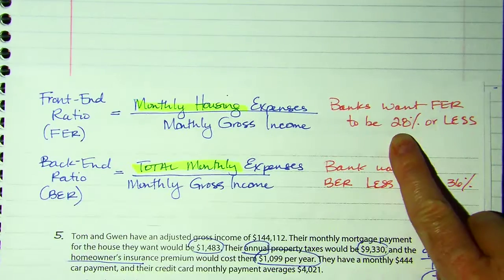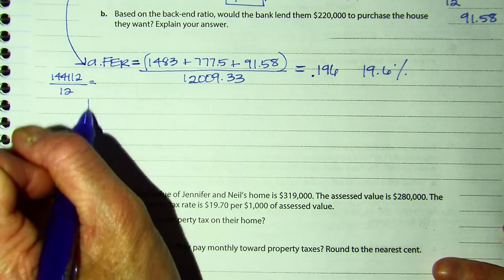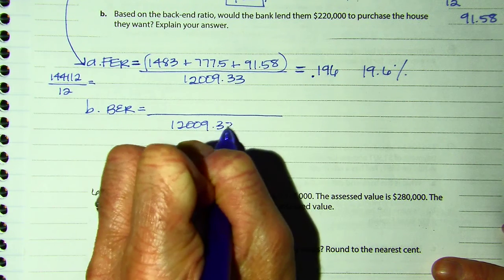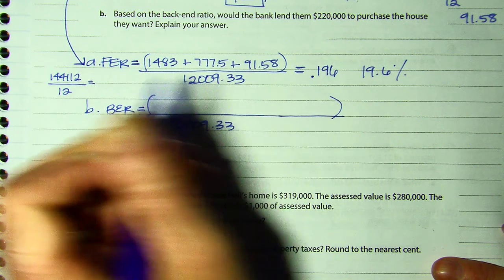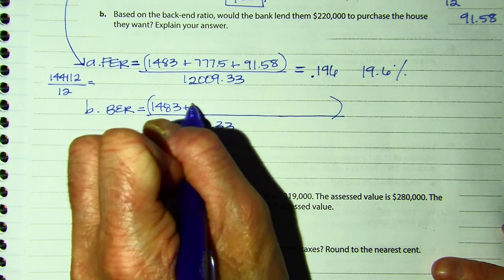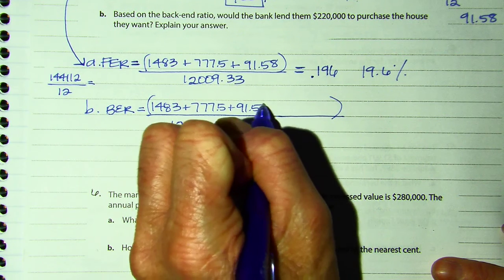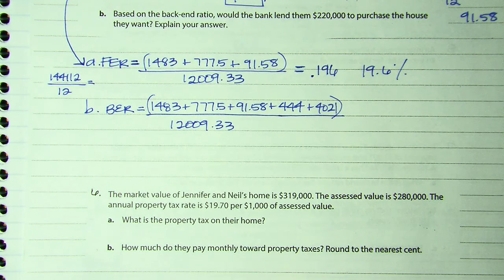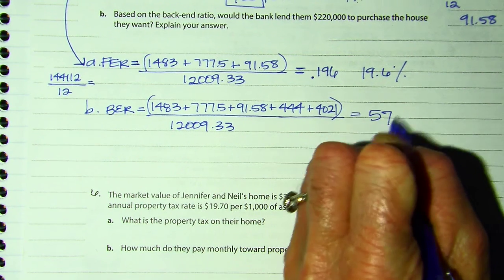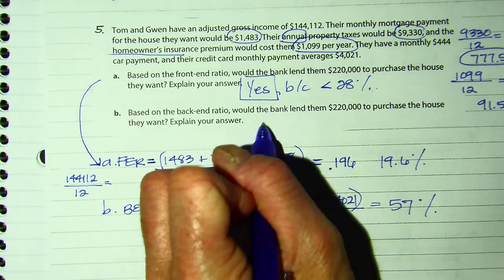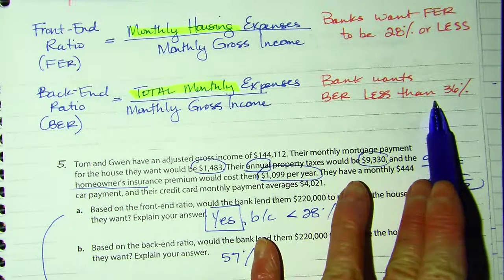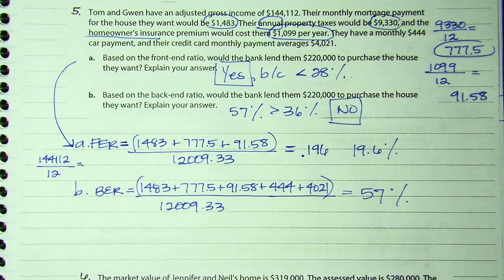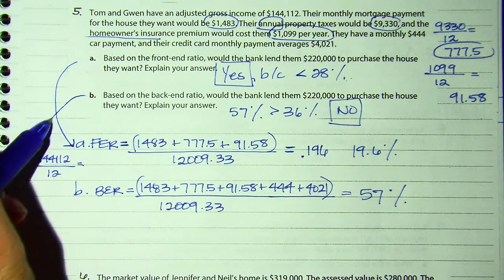For part B, the back-end ratio — the bottom number is the same, but the top number is all their expenses. So the $1,483 mortgage, their monthly property taxes, their homeowner's insurance, their car, and their credit card. You have to add all that up and then divide, and I got 57%. Since 57% is greater than what the bank wanted — greater than 36% — so no. Depending on which ratio the bank used would determine whether they felt this family could afford the loan.